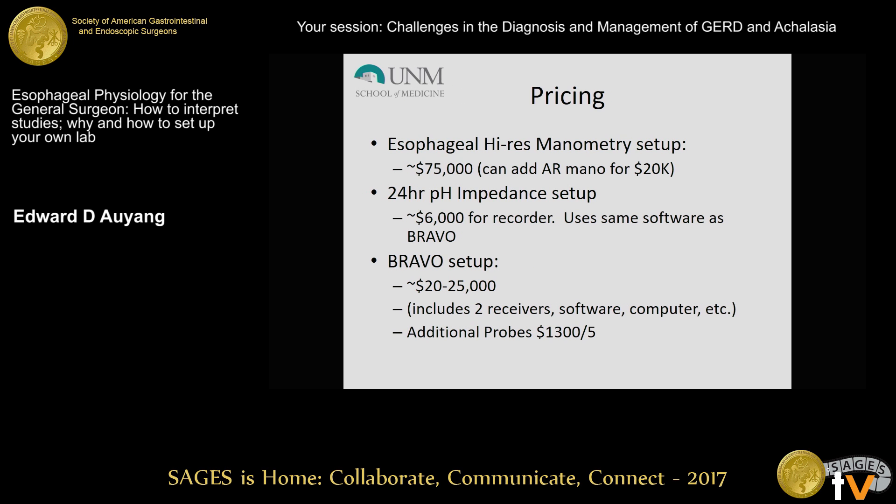In terms of pricing, to set up an esophageal high-resolution manometry lab, it's on the order of $75,000 — a pretty large chunk of change. Many industry groups are willing to do leasing programs or spread out payments over time to make it more financially feasible. Adding anorectal manometry is typically about a $20,000 additional add-on. For 24-hour pH testing, a Bravo setup is about $20,000 to $25,000, which typically includes two receivers, software, a computer, and buffer solutions. Additional disposable Bravo probes are about $1,300 for a pack of five. If you're going to do additional 24-hour impedance testing, the separate recorders are approximately $6,000 each and they are reusable.